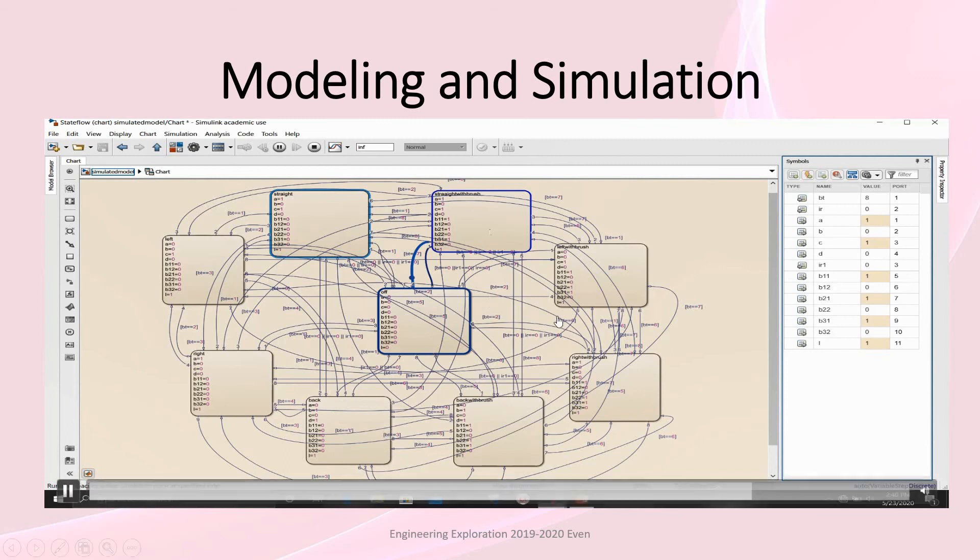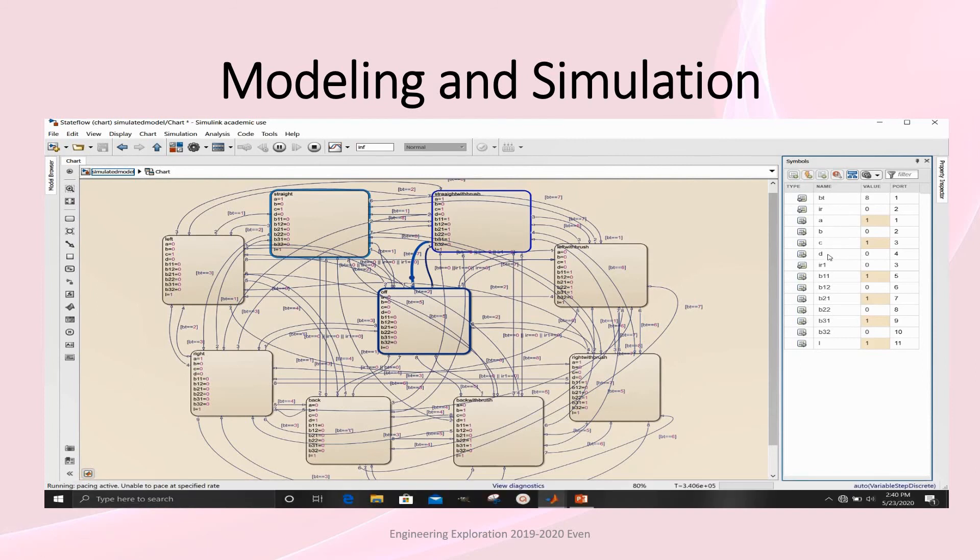We can accordingly view the values here. Bt for Bluetooth, IR for IR sensor in front, ABCD for wheels, B11, B12, B21, B22, B31, B32 for the brushes and N for the LED.